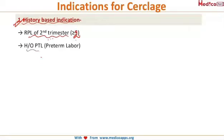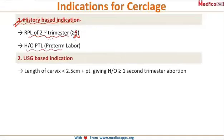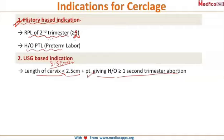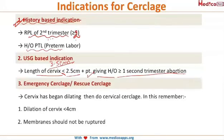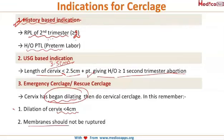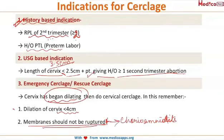A history of preterm labor can also be an indication for cerclage. The second indication is ultrasound-based: if the cervical length has reduced to 2.5 cm or less, along with a history of one or more second trimester abortions, cerclage should be performed. The third is emergency or rescue cerclage, done after the cervix has started dilating. The criteria are that cervical dilatation must be less than 4 cm and membranes must not be ruptured, as ruptured membranes with cerclage can lead to chorioamnionitis.